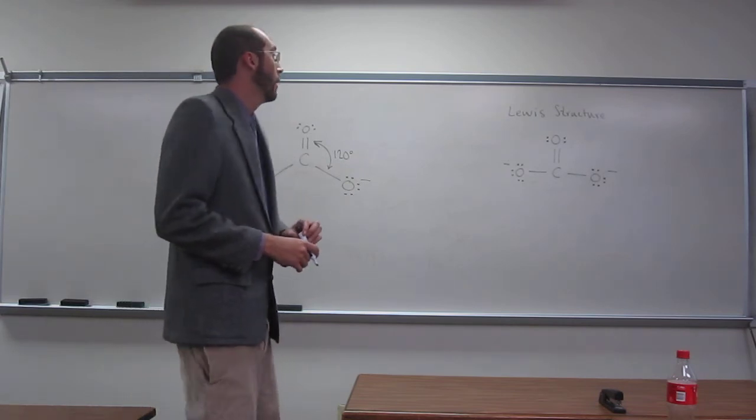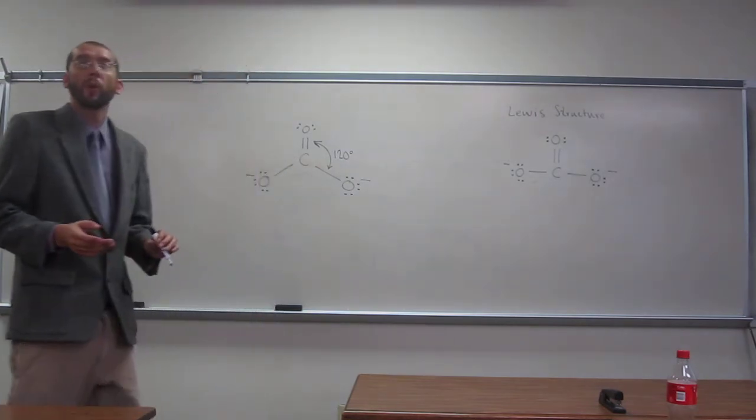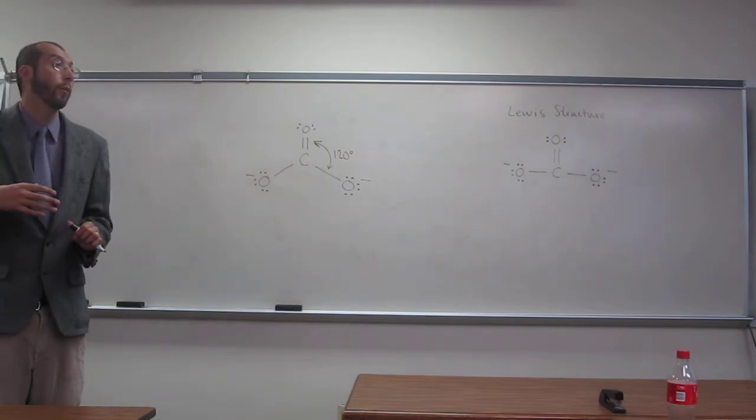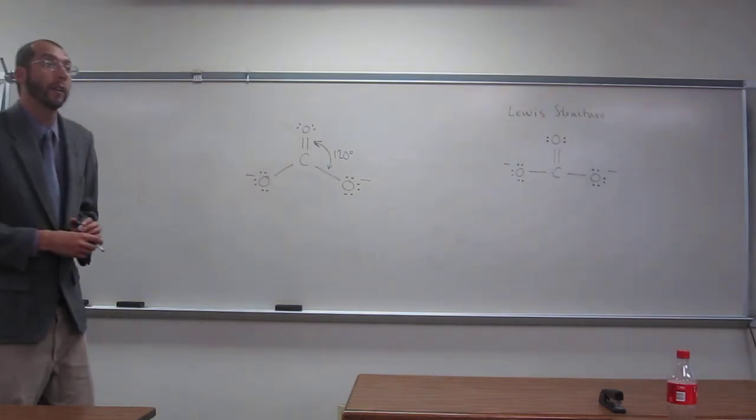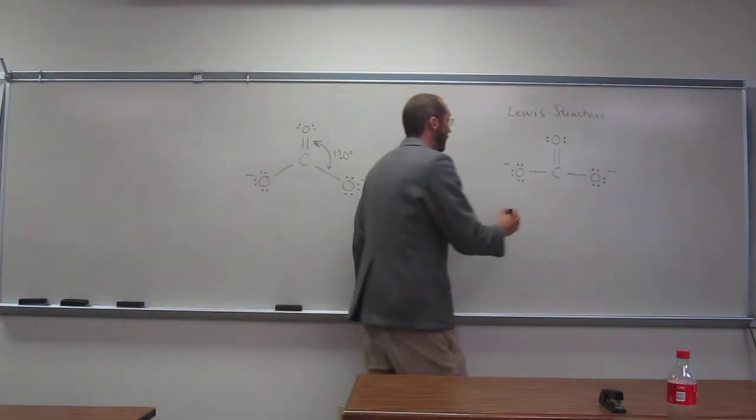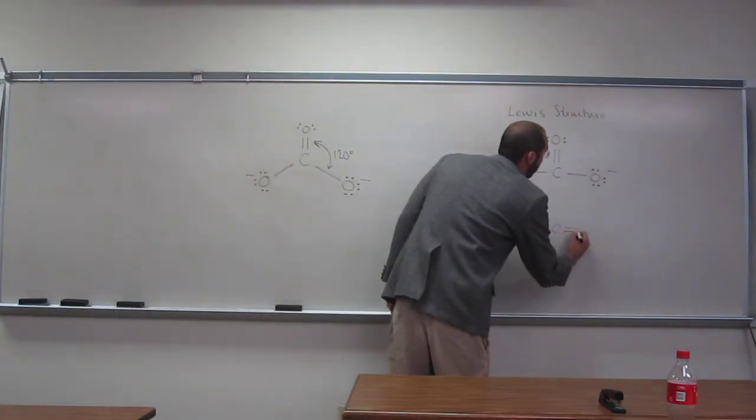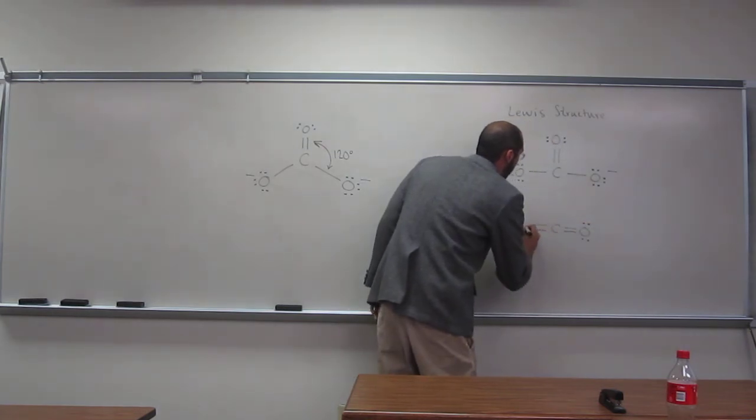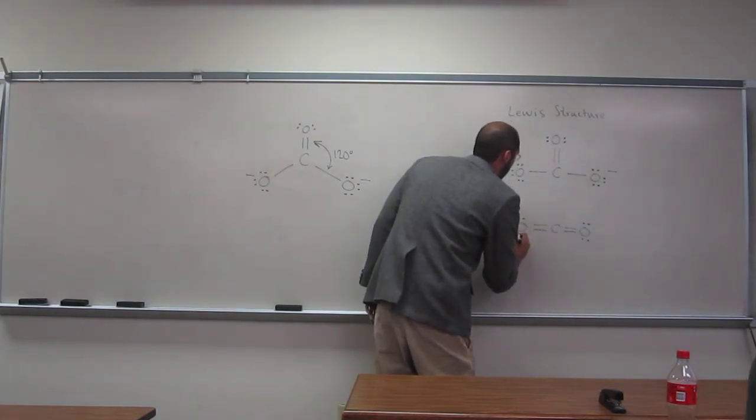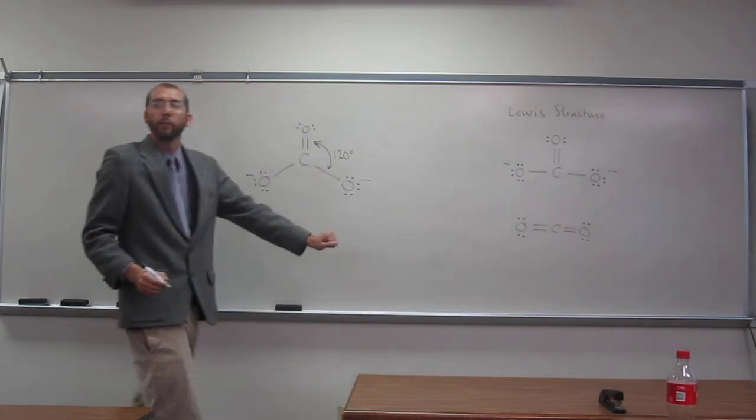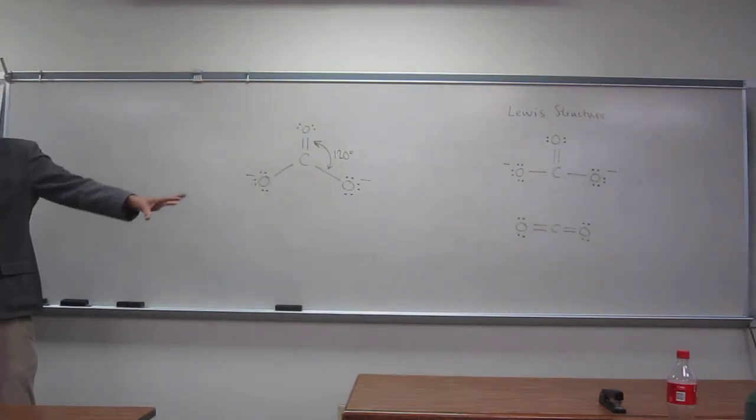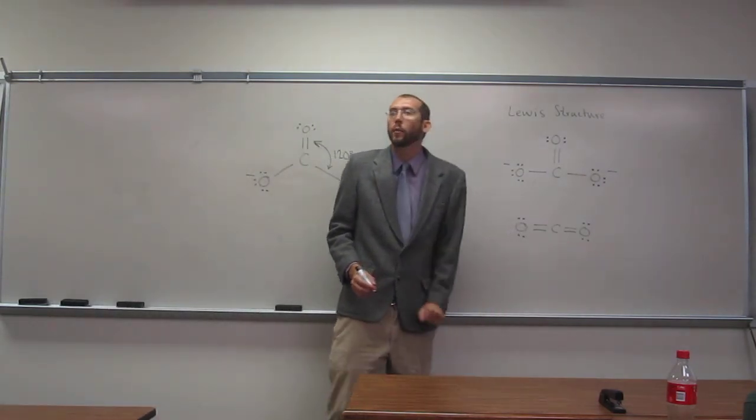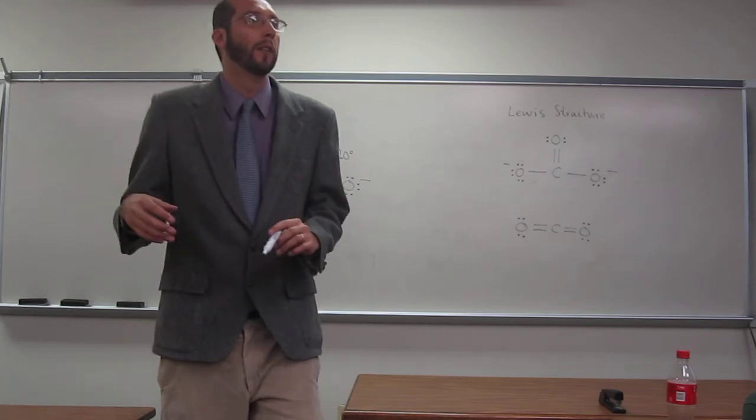Let's go back to our example of carbon dioxide. You guys remember building that earlier? The Lewis structure looked like this. How many regions of electron density do we have around that central carbon atom? Two.